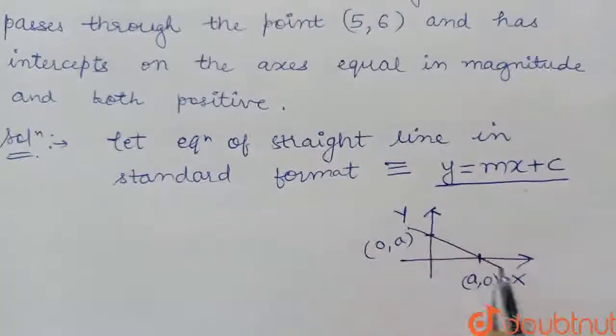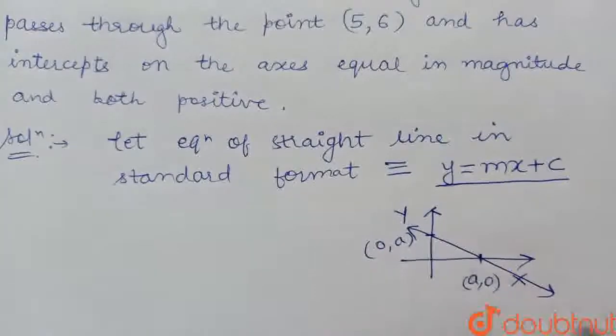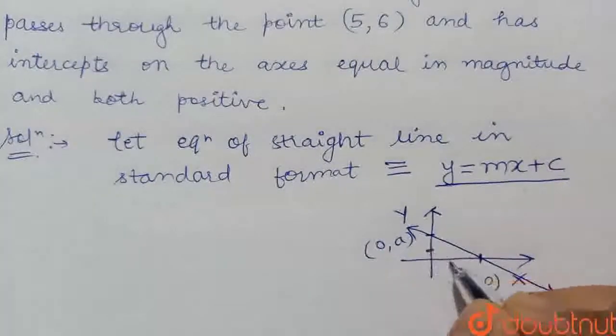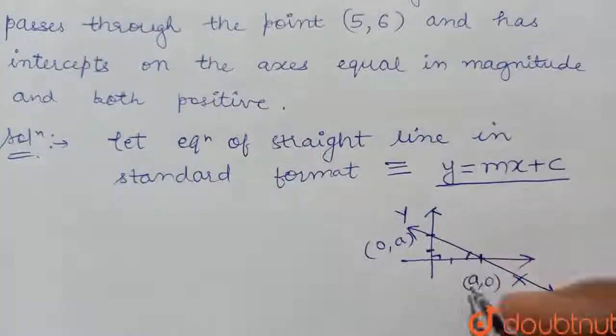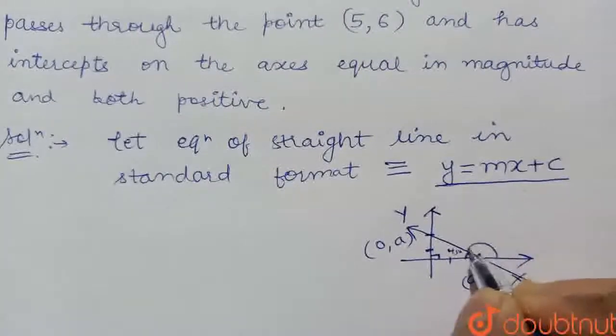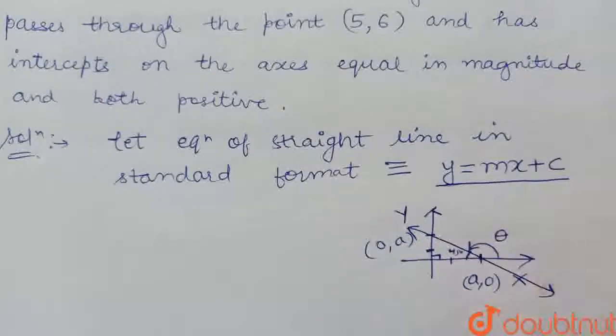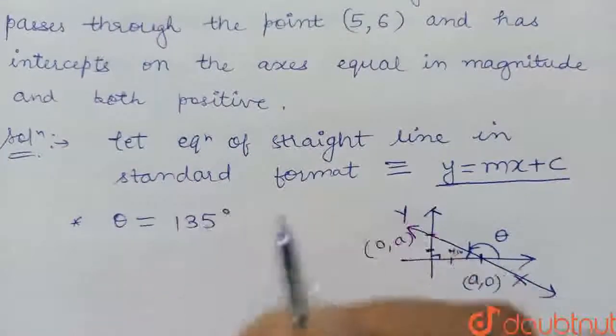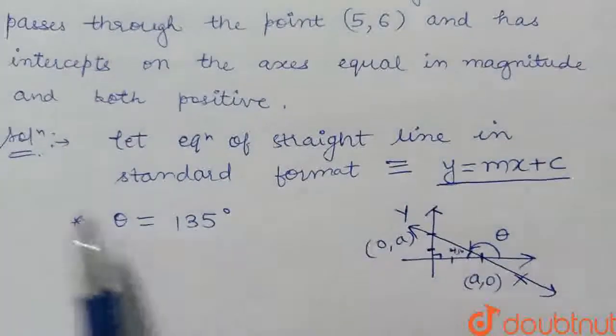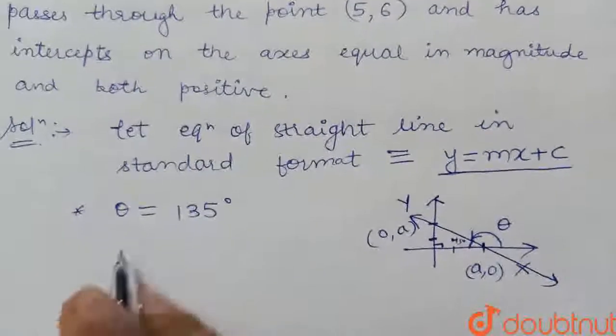So the straight line will be something like this. Due to both values being equal, this angle will be 45 degrees. So our angle theta will be equal to 135 degrees. Theta angle is 135 degrees according to the situation.